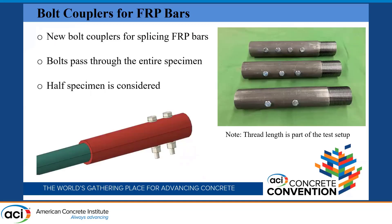So a new bolt coupler is designed in this study and suggested for splicing FRP bars. The idea is that the bolts pass through the entire specimen to make a full connection between the FRP bars and the couplers. The picture shows half of the specimen — some holes are drilled on the FRP bars and through the couplers, and the bolts go through the entire specimens.